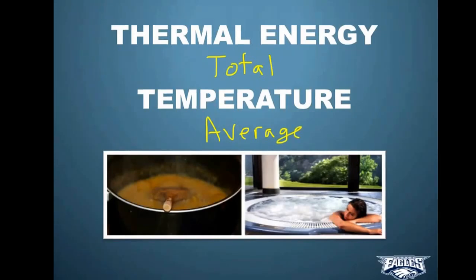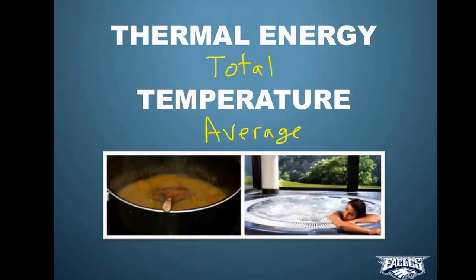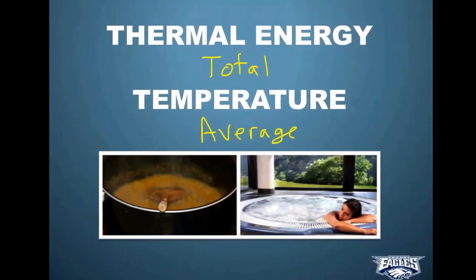I'll demonstrate with this example. This pot of soup is probably at 100 degrees Celsius — it's boiling. And this hot tub is only going to be at around 38 or 39 degrees Celsius. The difference in temperature between the two is very different — the soup wins by a long shot. But in terms of thermal energy, the hot tub actually wins, because thermal energy is the total amount of kinetic energy of all the particles. When you look at the hot tub compared to this little tiny pot of soup, this hot tub has way more particles in it. So if you were to add up all the thermal energy of all those particles, even though they're cooler at only 38 degrees, they would all together have a lot more energy than this little tiny pot of soup. Thermal energy is the total amount of kinetic energy; temperature is the average.